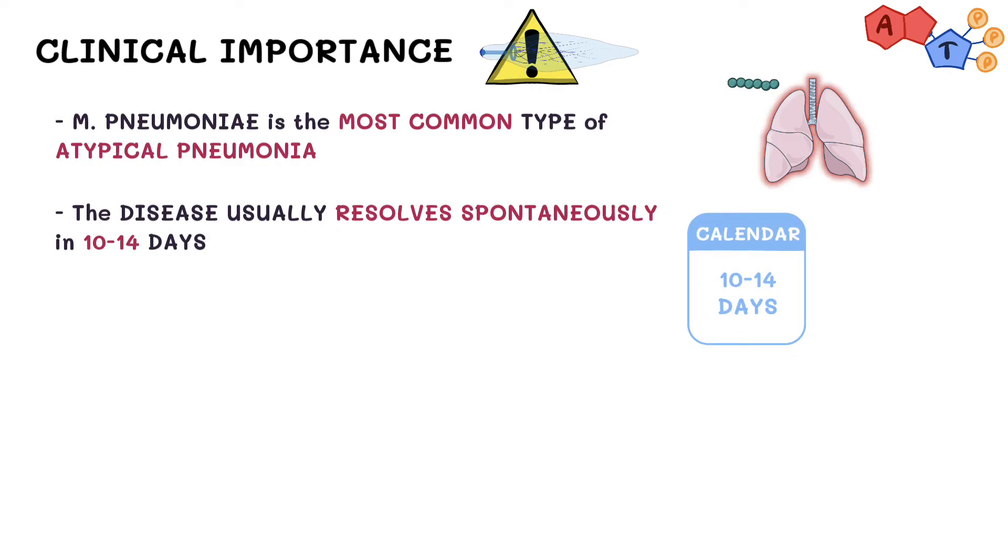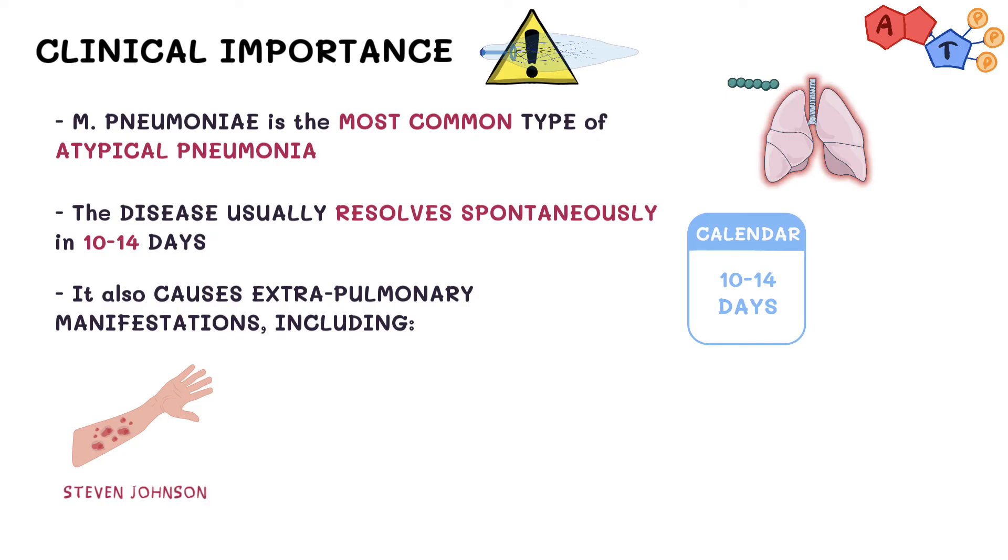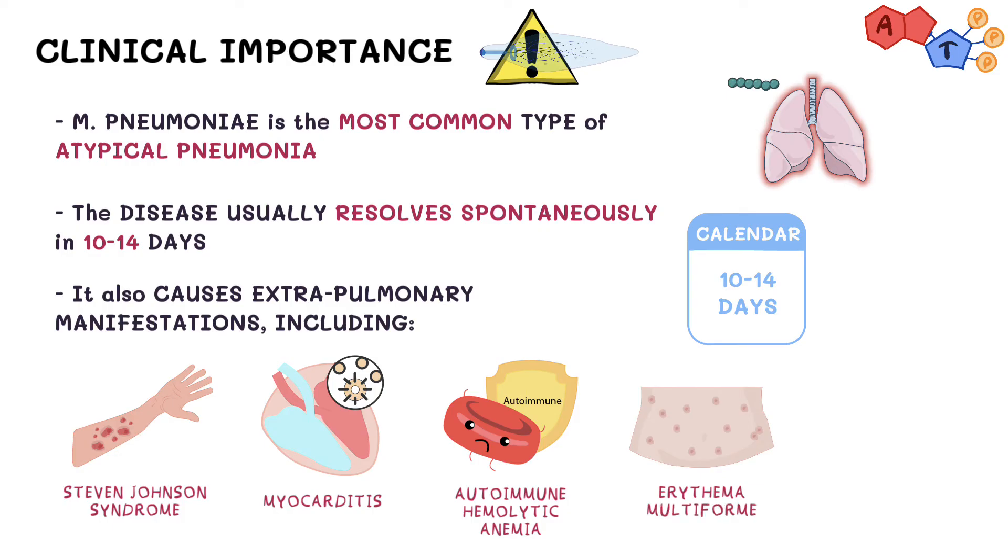In addition to pneumonia, the organism can also cause extra-pulmonary manifestations, which include Stevens-Johnson syndrome, myocarditis, autoimmune hemolytic anemia, erythema multiforme, Raynaud's phenomenon, and others.